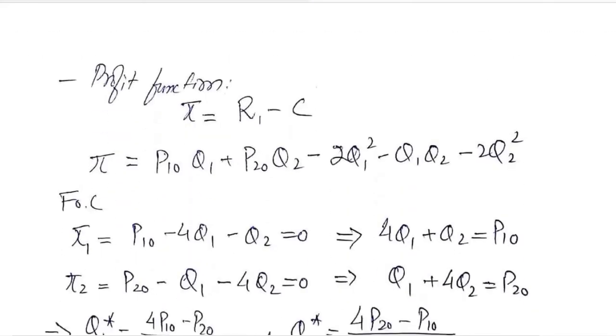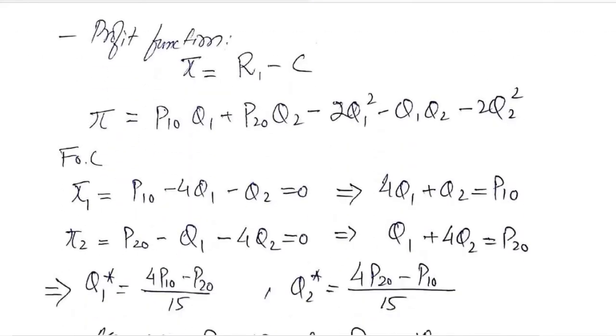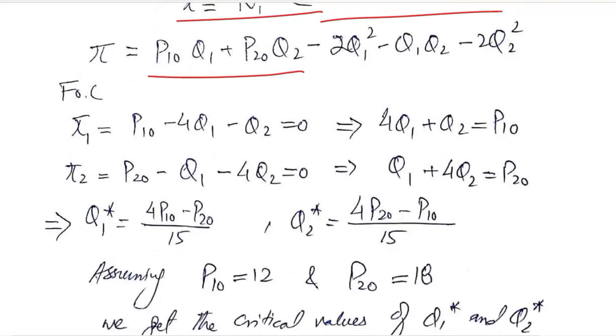Once we have the revenue function and the cost function, it is easy to calculate the profit function, which is calculated by the difference of the two. This is the revenue function and this is the cost function. Now we have simple algebra.